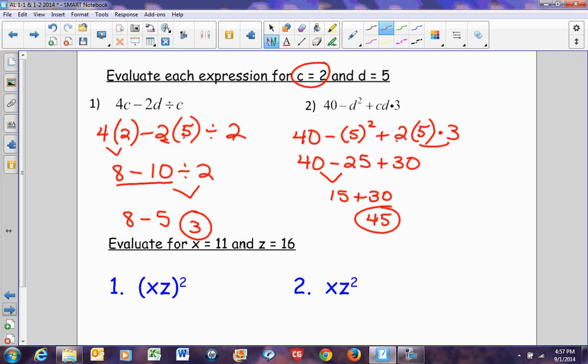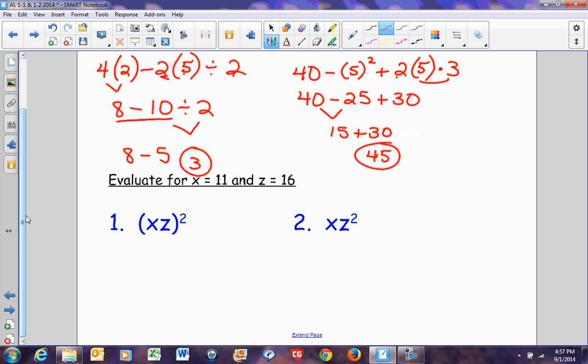The last types of problems we need to do are those where we're going to evaluate everything. And the thing we've got to pay attention to is where that variable happens to be with the exponents. If you'll notice here, this tells us that x times z, this entire quantity is squared. Because the square is on the outside of the parenthesis. This problem, the only thing that is squared is the z because the square is only next to the z. Be careful because those two, these are two different answers.